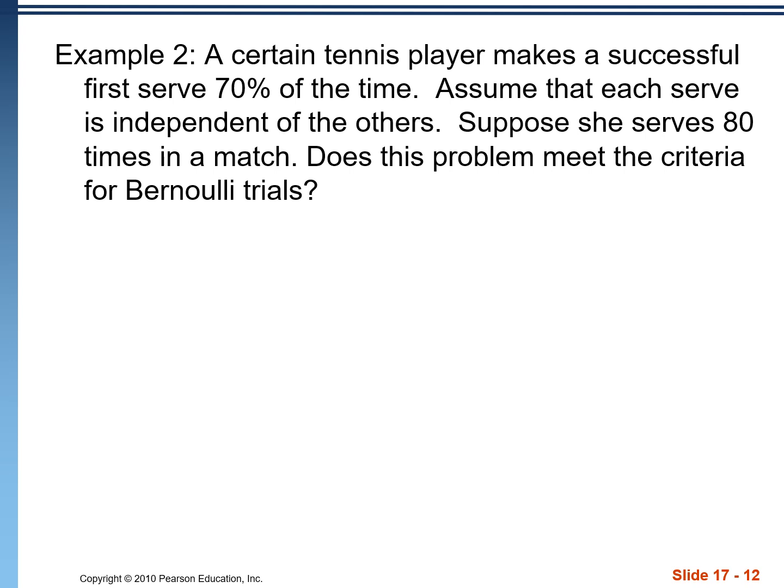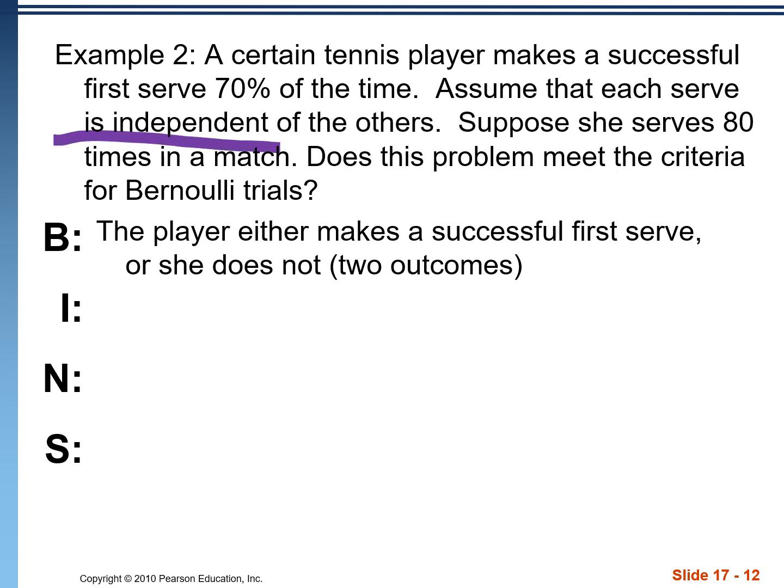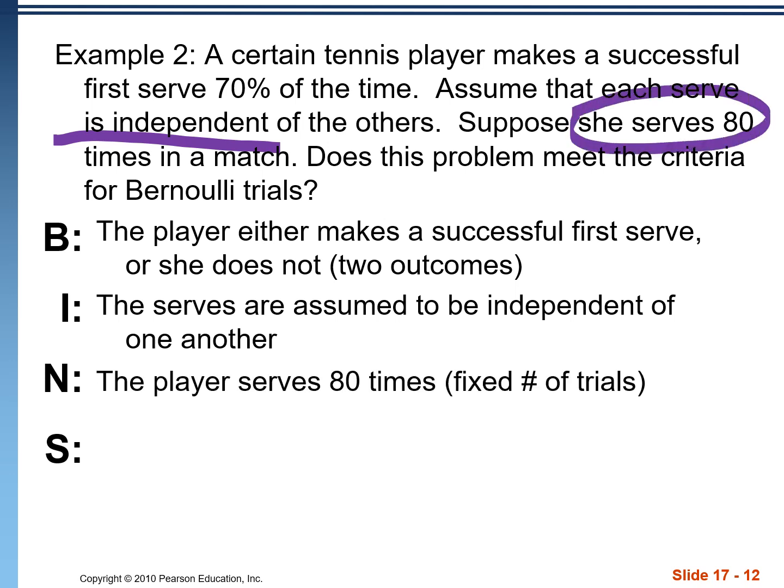That being said, let's justify that we can actually use a binomial model for this problem. So the B, binary. Is this problem binary? Are there only two outcomes? Yes, she's either going to make a successful first serve or she's not. I, independent. It tells us right up here the trials are assumed to be independent. N is number. Are there a fixed number of trials? She's serving 80 times. And S success is the probability of success constant. It is. She makes her first serve 70% of the time. These do meet the criteria for Bernoulli trial. We can use a binomial model. 80 trials, 0.7 probability of success.